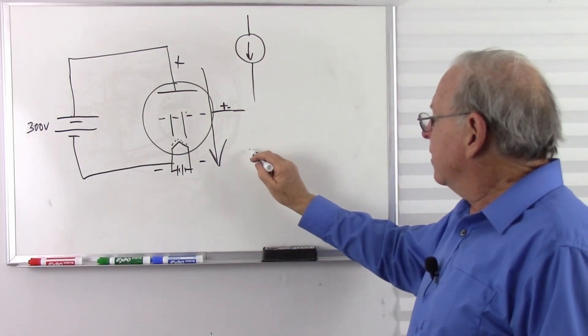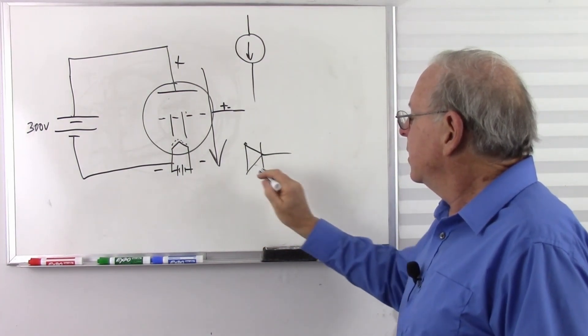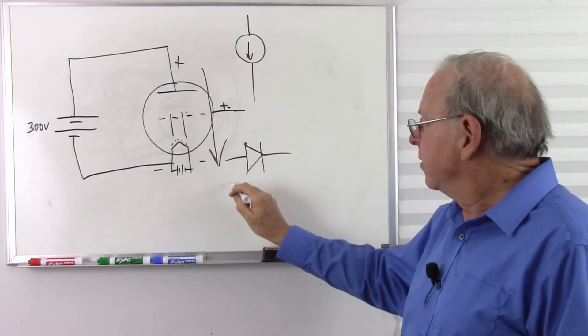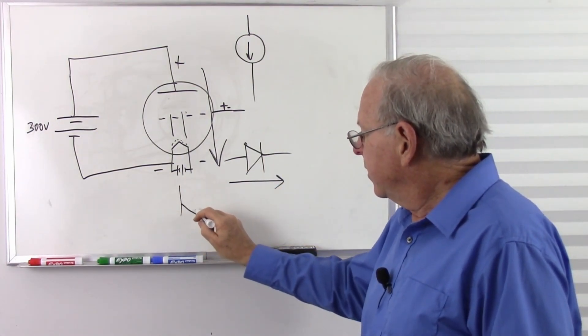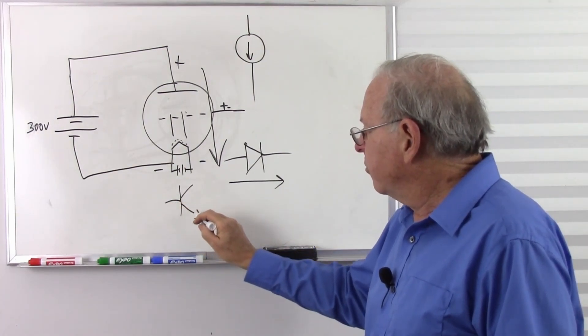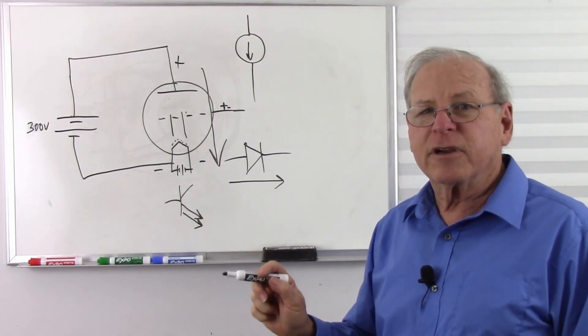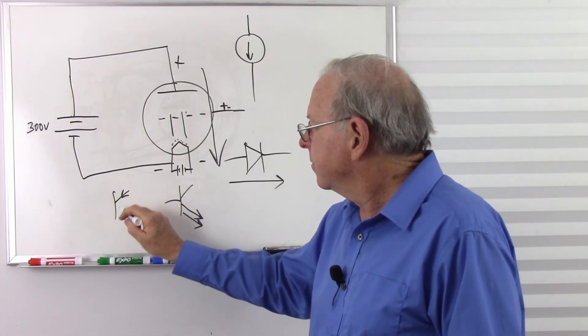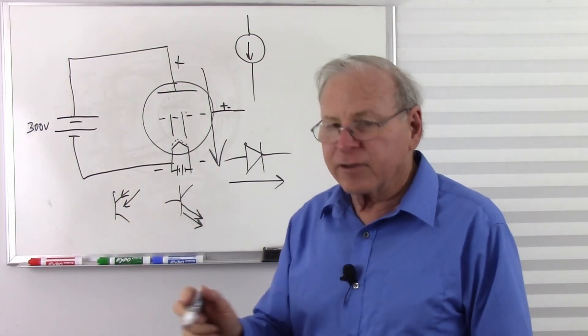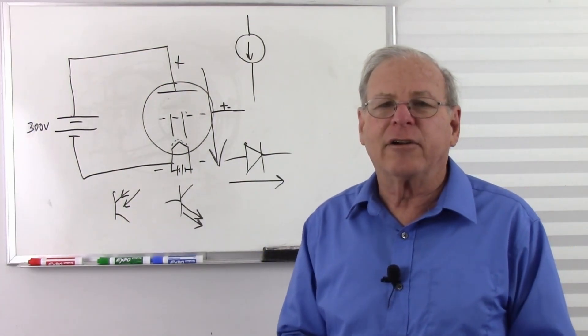When it comes to active components, like a diode, what direction does the arrow point? The direction of conventional current. How about a transistor? NPN transistor, arrow points in the direction of conventional current. PNP transistor, arrow points in the direction of conventional current. So it's just what the industry uses as a standard.